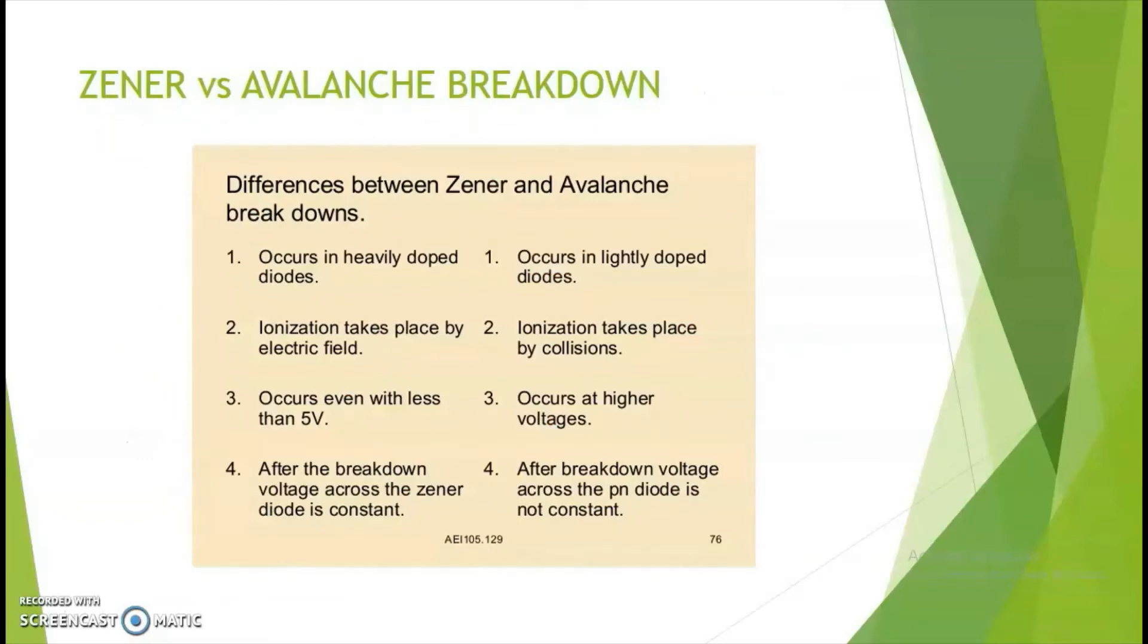These are the differences between Zener and avalanche breakdown. Zener occurs in heavily doped diodes and it is due to ionization by electric field and it occurs less than 5 voltage. And once it goes into a Zener breakdown, the voltage across the diode would be a constant. It is the opposite cases in case of an avalanche breakdown.